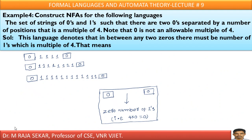Example 4: construct NFA for the language — the set of strings of 0s and 1s such that there are two 0s separated by a number of positions that is a multiple of 4. Note that 0 is an allowable multiple of 4. This means there must be two 0s, and these two 0s are separated by 1s. How many 1s? That number of 1s must be a multiple of 4 — that is, maybe 4, 8, 12, or 16 ones. It must start with 0 and end with 0, and in between you can keep a number of 1s that is a multiple of 4.